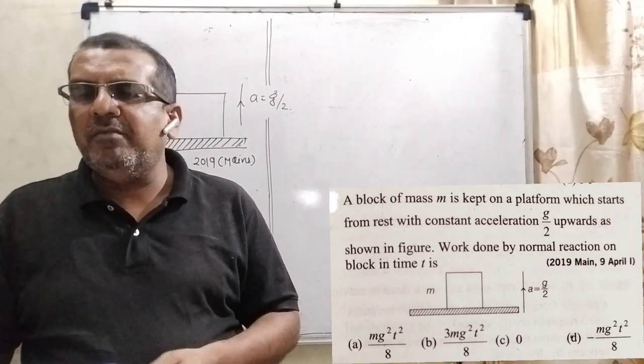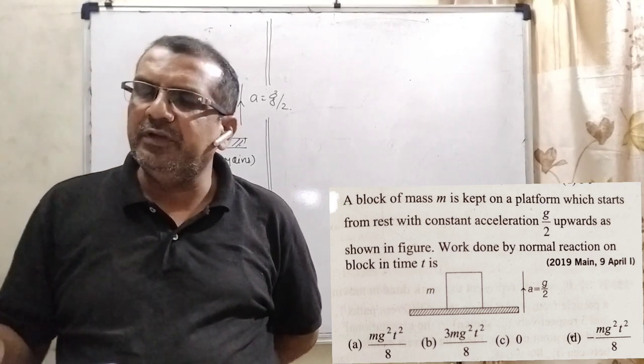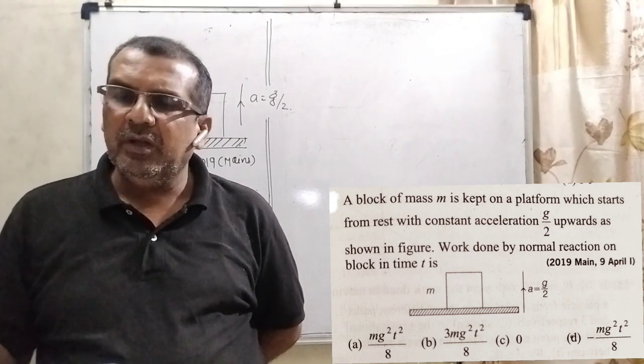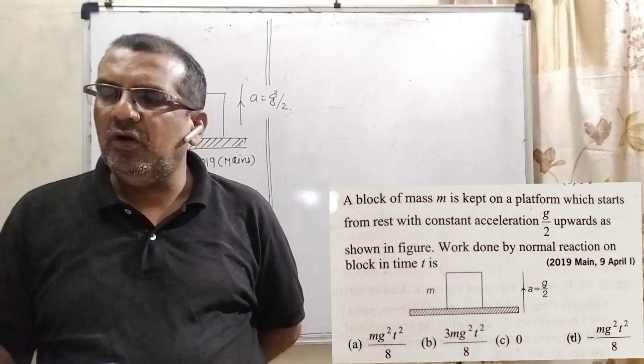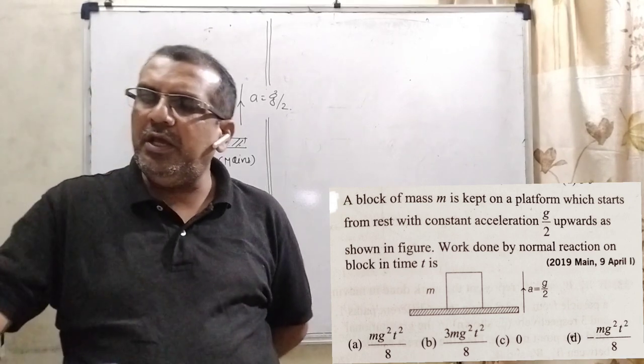Here is the question. A block of mass m is kept on a platform which starts from rest with constant acceleration g/2 upwards as shown in the figure. Work done by normal reaction on block in time t is. Here we have given 4 options.